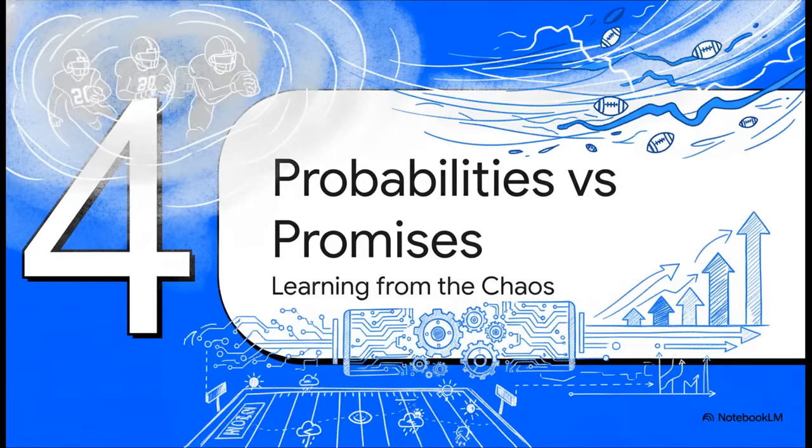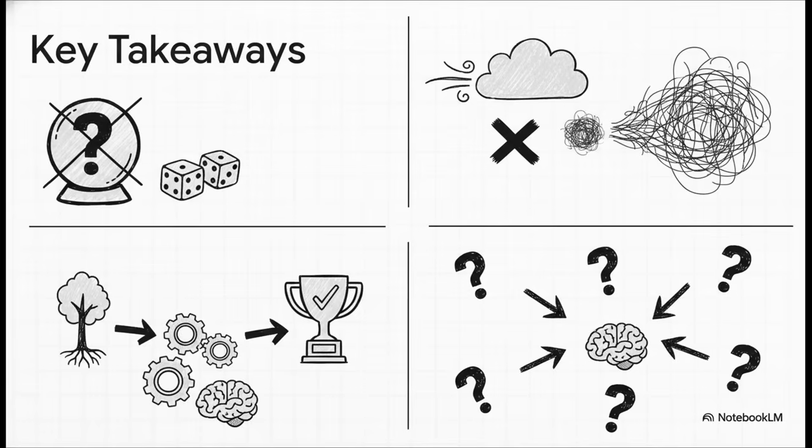Okay, so after watching the models find harmony in the fog and then go to war in the wind, what's the big picture here? What are the key lessons we can pull from these two totally different scenarios? Alright, a few key takeaways.